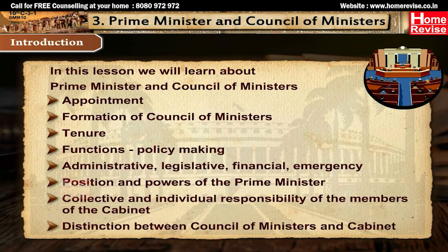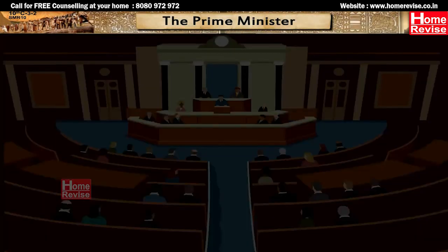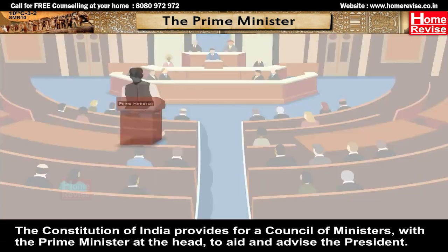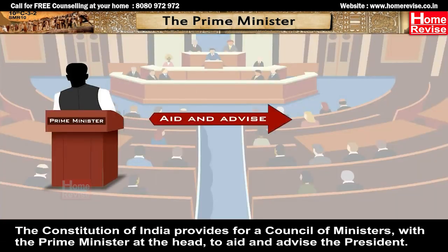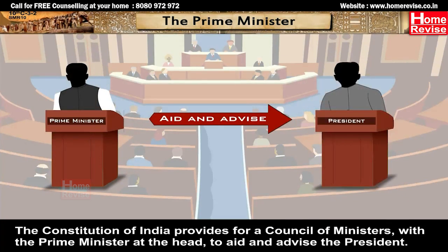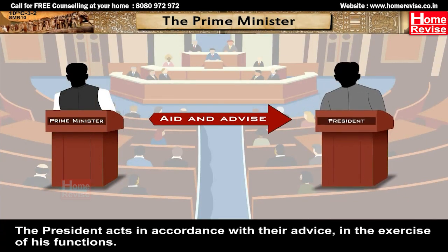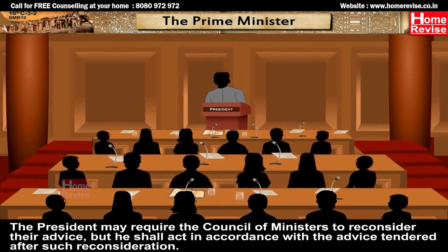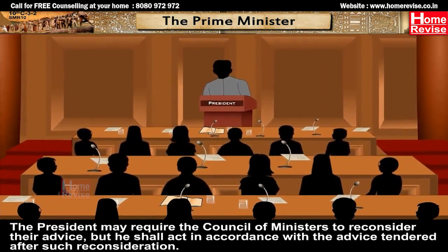The distinction between the Council of Ministers and Cabinet, and the Prime Minister. The Constitution of India provides for a Council of Ministers with the Prime Minister at the head to aid and advise the President. The President acts in accordance with their advice. The President may require the Council of Ministers to reconsider their advice, but shall act in accordance with the advice tendered after such reconsideration.